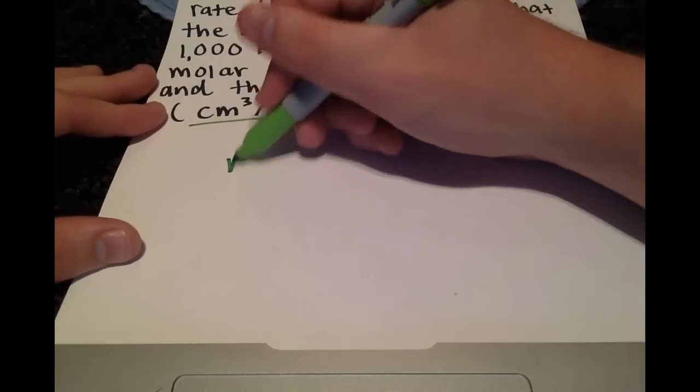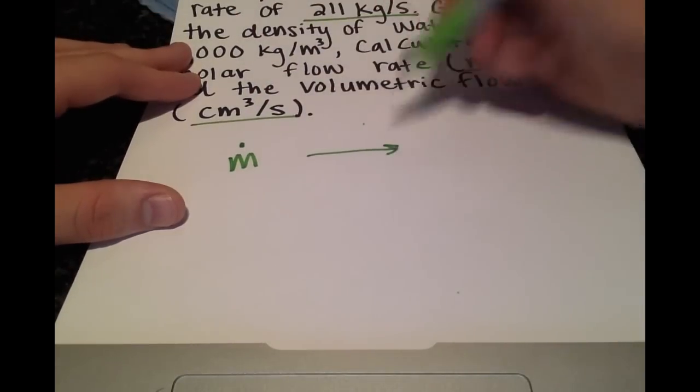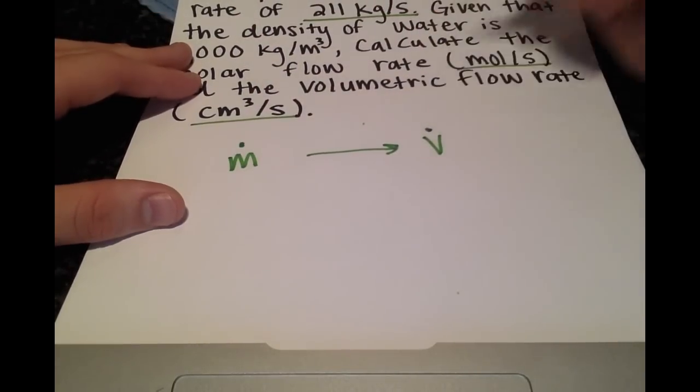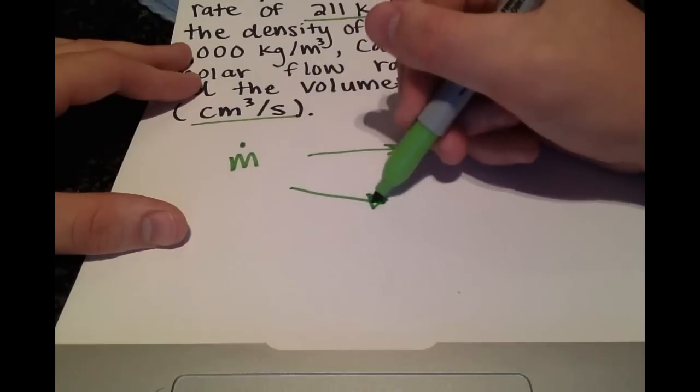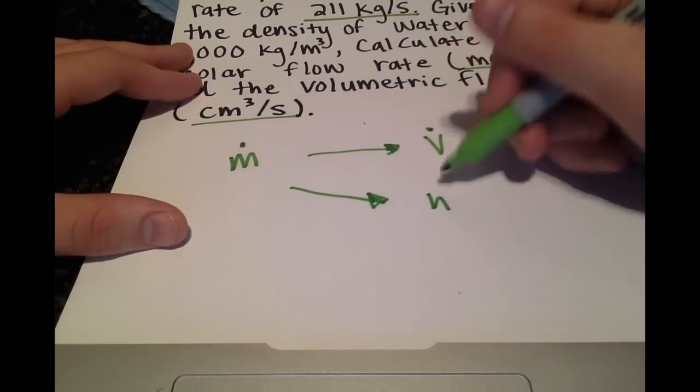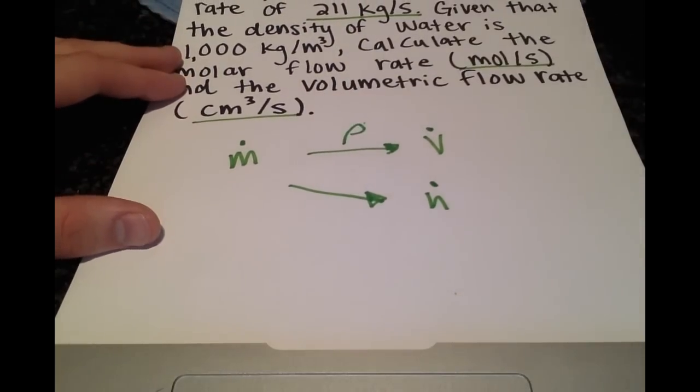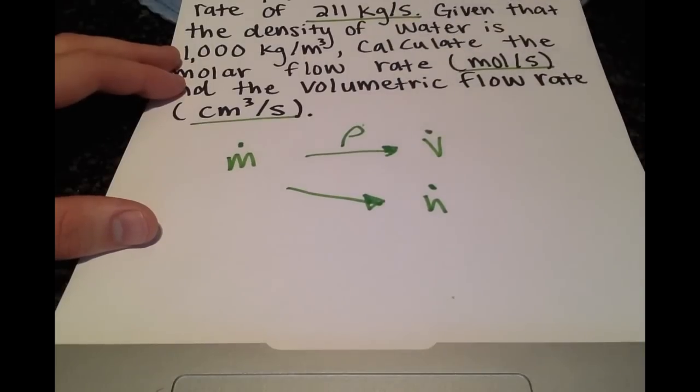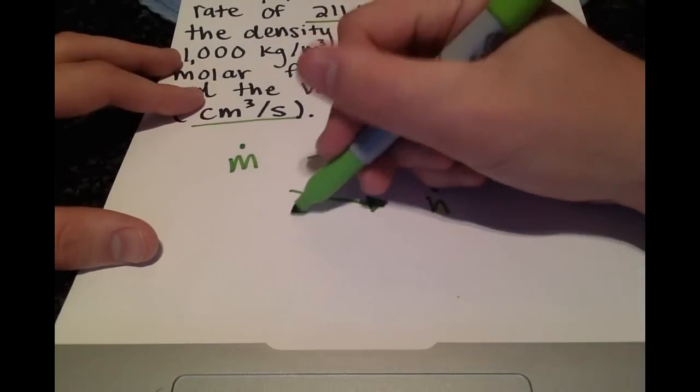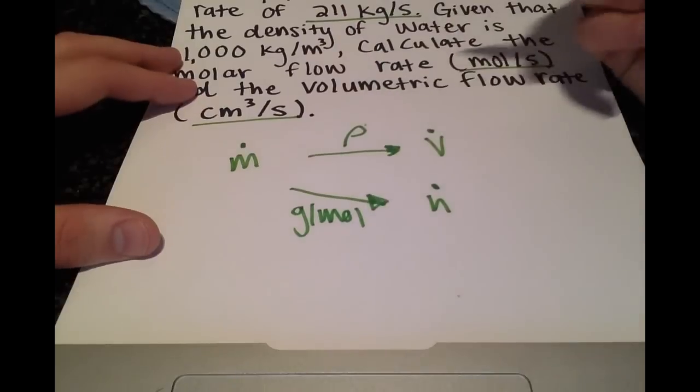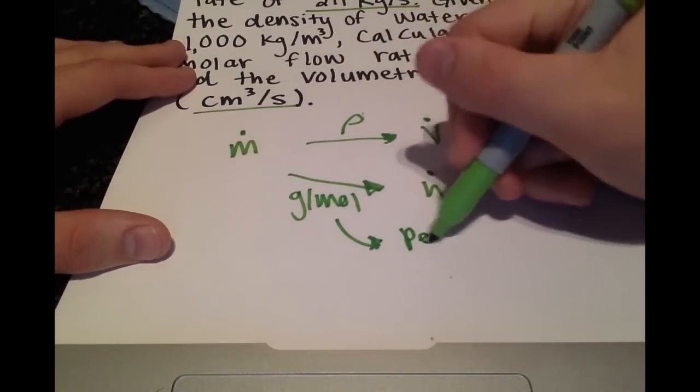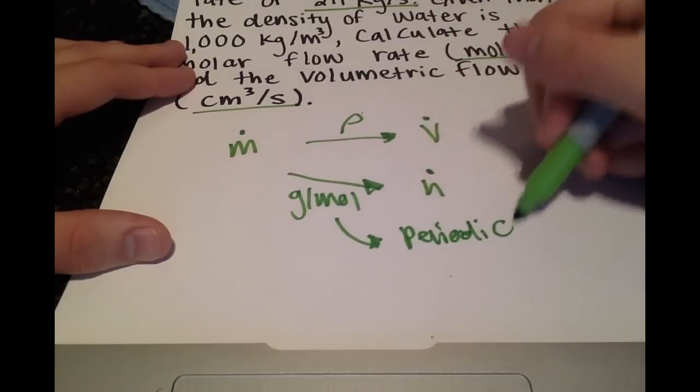Just as we said on the previous page, we're starting with the mass flow rate and we want to get the volumetric flow rate and we also want to get the molar flow rate. To do that, we're going to use the density which is given, and we're also going to use the molar mass of water, which we can look up from the periodic table.